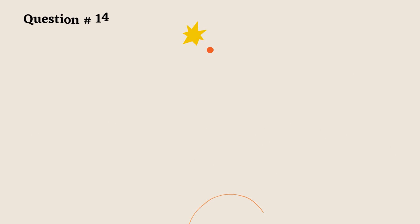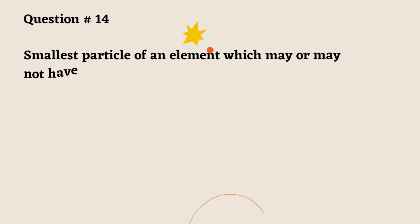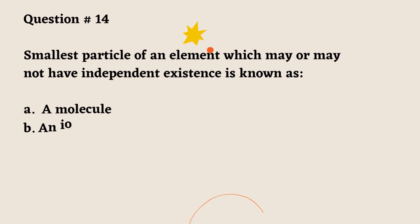Question number 14. Smallest particle of an element which may or may not have independent existence is known as: A. A molecule. B. An ion. C. An atom. D. An electron. Correct option is C.